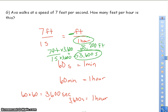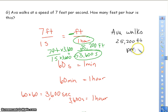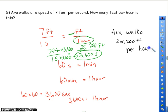So the answer is Ava walks 25,200 feet per hour. As always, if you have questions for Mr. Kohlinger or myself tomorrow, please ask. If there are certain problems you wanted to see done on the board again, we're going to teach it again. Thanks for watching.